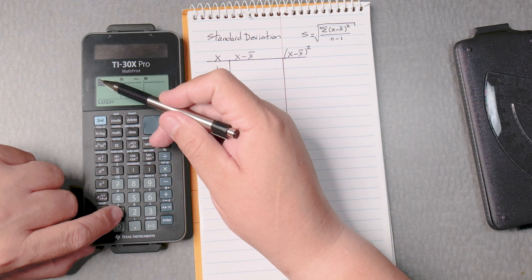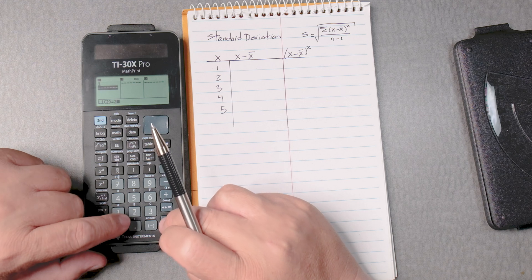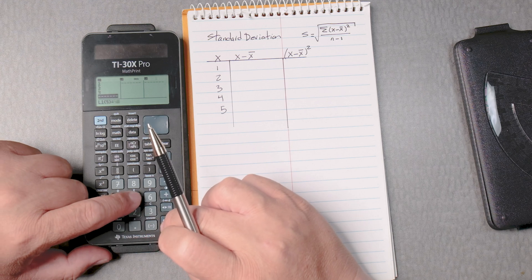So on L1, we're going to type in 1, enter, 2, enter, 3, enter, 4, enter, 5, enter.